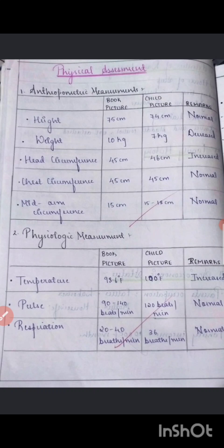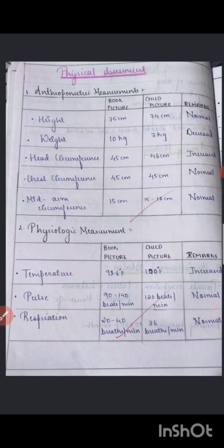Next is the physical assessment. First do the anthropometric measurements — height, weight, head circumference, chest circumference, and mid-arm circumference. Mention book reference values alongside the child's actual values with remarks. Then record vital signs — temperature, pulse, and respiration. Blood pressure is not required for children. If pulse is elevated, note tachycardia; if respiration is elevated, note tachypnea; if decreased, note bradycardia or bradypnea.